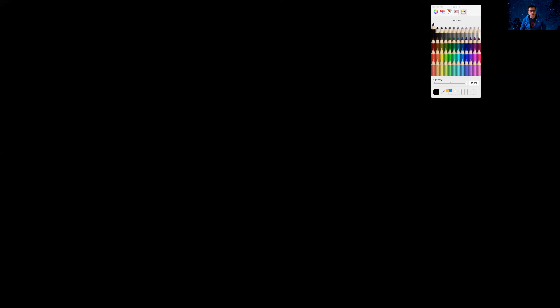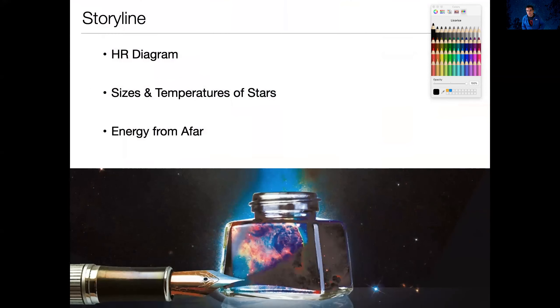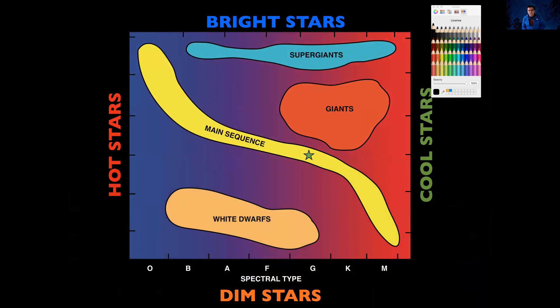Let me go ahead and start some slides. We're going to start talking about the energy of the stars. It's actually a variety of things that influences what we call habitability, but the energy from the stars is one of the big influences on whether or not a planet will be habitable. We'll start with where we left off last time — the HR diagram — to guide our thinking about the properties of stars, and then we'll talk about energy from afar: the energy a planet receives depending on how far it is from its parent star.